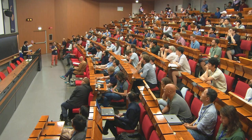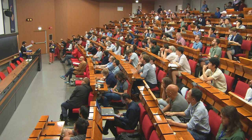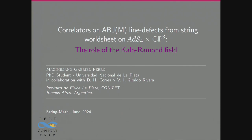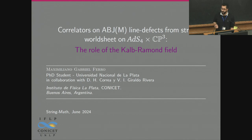Next speaker is Maximiliano Ferro, who will talk about correlators in the ABJM line defects from string worldsheet on ADS4×CP3. The ABJ or ABJM model is an N=6 super-Chern-Simons gauge theory with matter, with gauge group a product of U(M) gauge groups. At large N, this model describes M-theory on ADS4 times a seven-dimensional sphere quotient by a discrete group. In the Horava limit, the geometry collapses to ADS4×CP3 and there is a type IIA string theory description. I will focus in particular on the role of the Kalb-Ramond field.